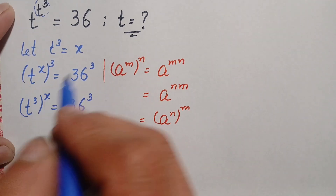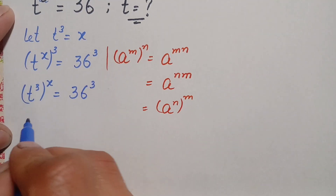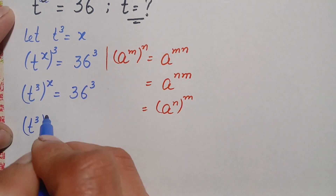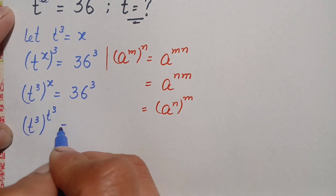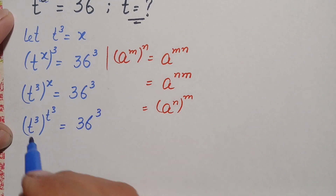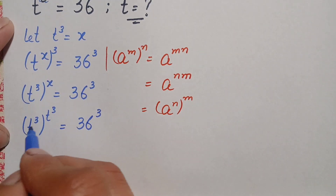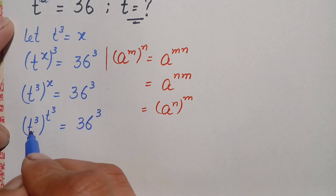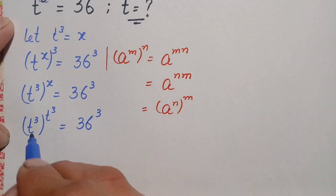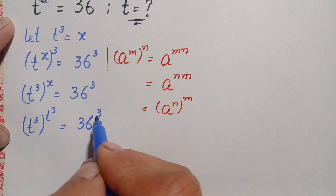Here we will replace x back with its value, that is t cubed. So the left hand side becomes t cubed all raised to power t cubed, equal to 36 cubed. Notice on the left hand side there is the same variable in both the base and the power — t cubed is in the base and t cubed is in the power.